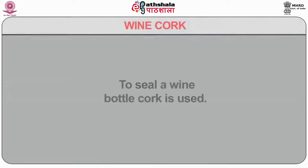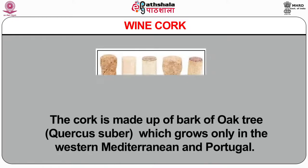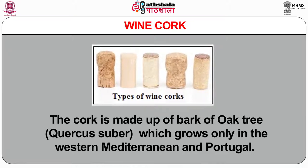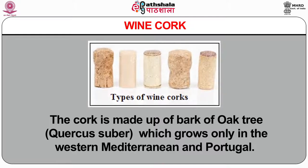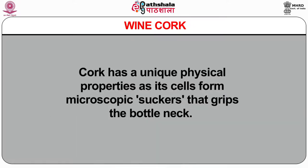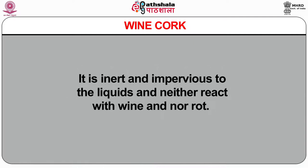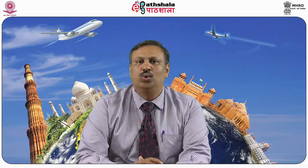To seal a wine bottle, cork is used. The cork is made from the bark of the oak tree, which grows only in the western Mediterranean and Portugal. Cork has unique physical properties — it seals from microscopic suckers that grip the bottle neck. It is impervious to liquids, neither reacts with wine nor rots. Only molds and fungi are likely to affect it, but these can be avoided. Occasionally, some bottles will have a corked or tainted aroma and flavor. Nowadays, synthetic corks made from plastic foam and screw caps are also being used by many wine producers.